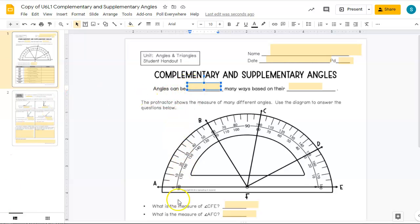Angles, as we've mentioned, can be two rays with a common endpoint, or we can think about them as a measure of rotation. Angles can be named several different ways based on their characteristics. So we're going to focus on different families of angles and how we measure them.